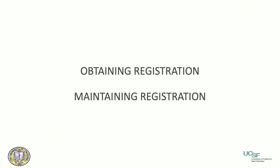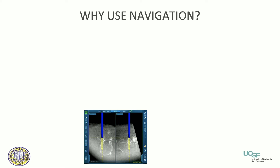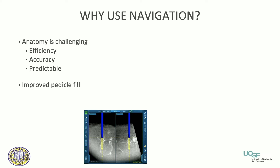Navigation is really about obtaining registration and maintaining registration. That encapsulates the technique. The predictability — nobody likes to get punched in the face, and we've all been there; it's a bad day in the operating room. Navigation can prevent us from getting punched in the face. Why do I use navigation apart from the predictability? If the anatomy is challenging, it becomes very efficient, accurate, and again, predictable.